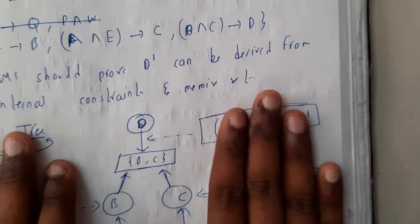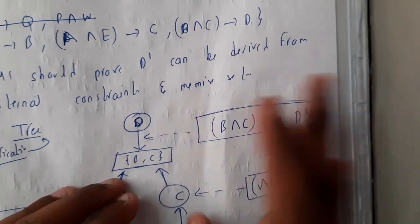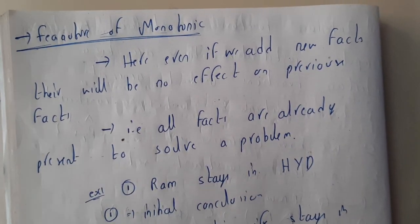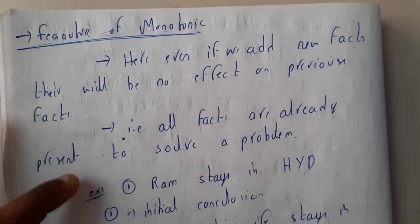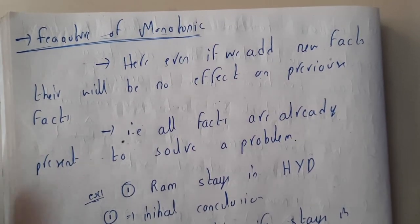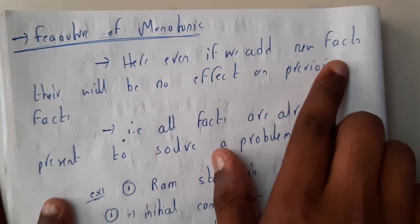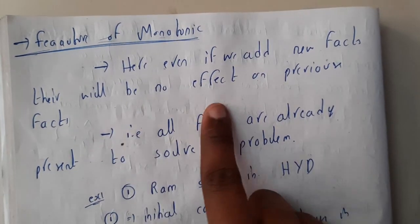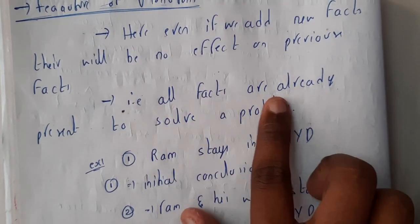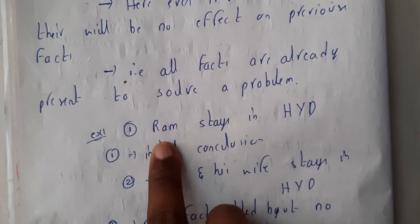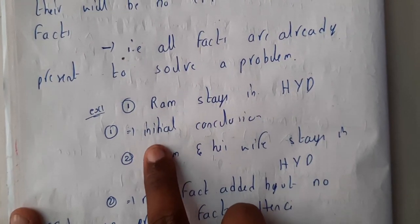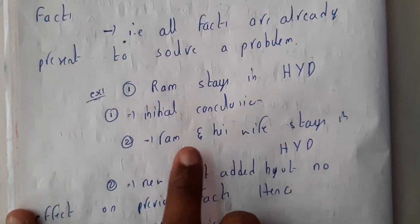Let us go through the features of monotonic. I told you monotonic will not affect the previous values, right? So here even if we add new facts there will be no effect on the previous facts. That is, all the facts are already present to solve a particular problem. Ram stays in Hyderabad - this will be your initial conclusion. Ram and his wife stays in Hyderabad - the second will be your new fact.